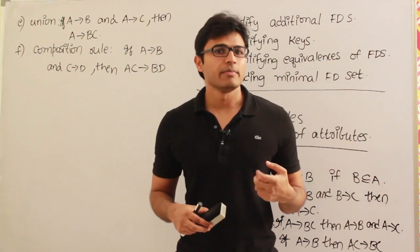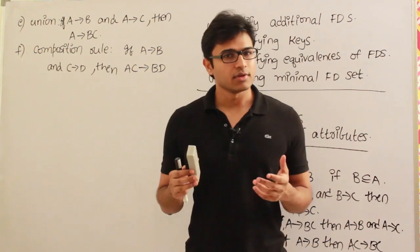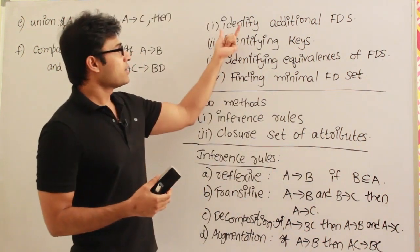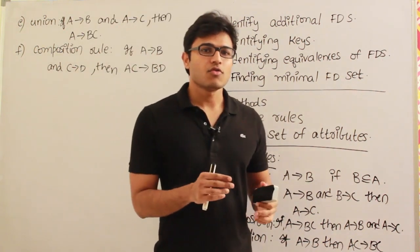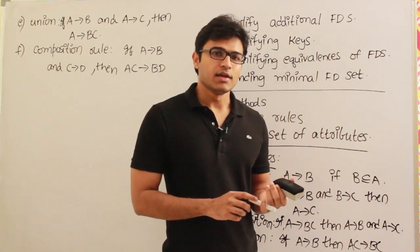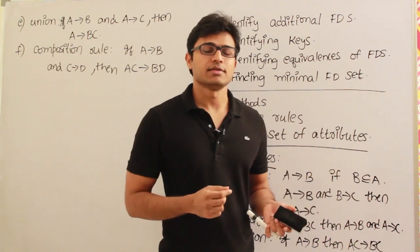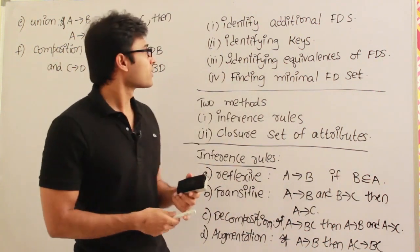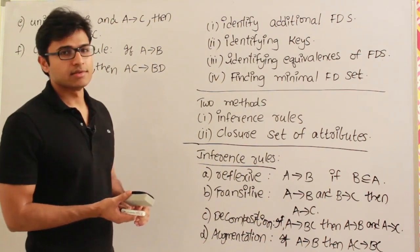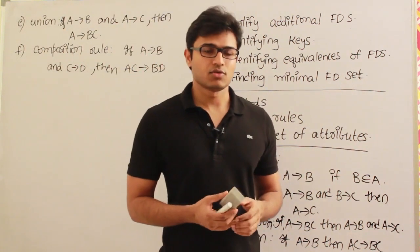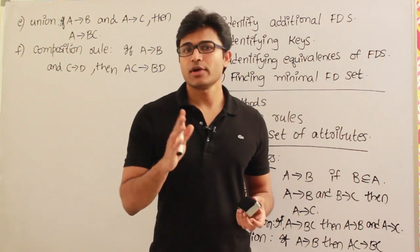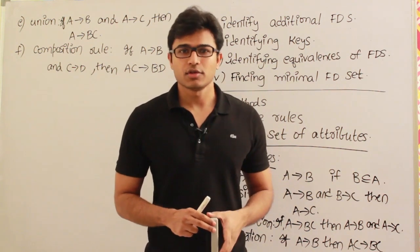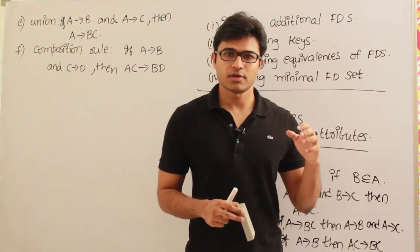After getting that basic set of FDs, I would like to do many things before going ahead with normalization. The operations we perform on functional dependencies include: identifying additional functional dependencies — meaning from the given FDs we can derive even more FDs — and identifying candidate keys using functional dependencies, which is a very interesting technique we are going to use when constructing the relational database.